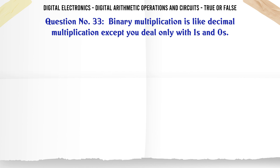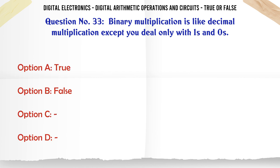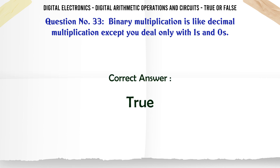Binary multiplication is like decimal multiplication except you deal only with ones and zeros. True or False? The correct answer is True.